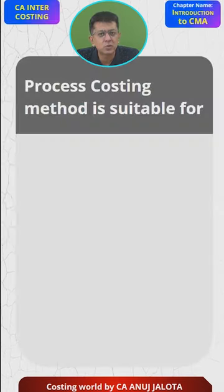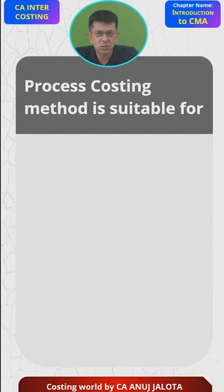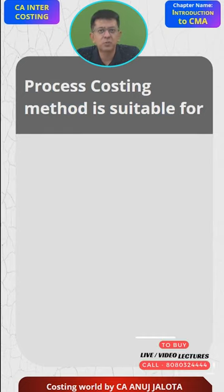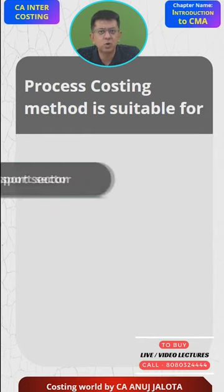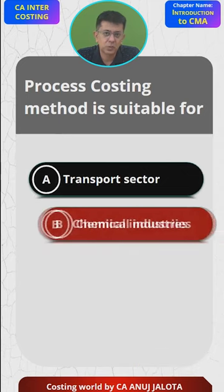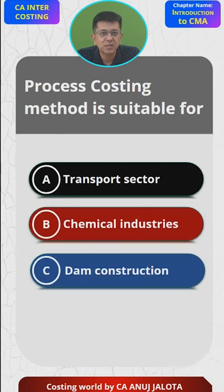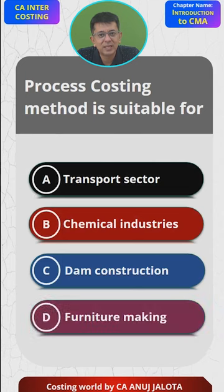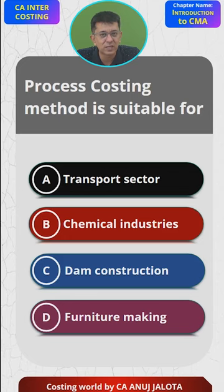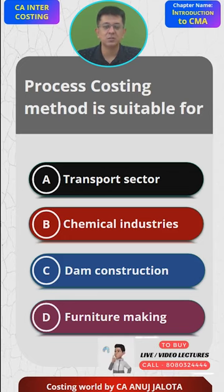Once we finish off the MCQs of the module, we will do our own made-up MCQs. So let's do them now. Process costing method is suitable for — the four options are: A) transport sector, B) chemical sector, C) dam construction, and D) furniture making. This is easy stuff. You can try to cancel out all the wrong ones and automatically arrive at the correct one. Please comment your answers in the section below.